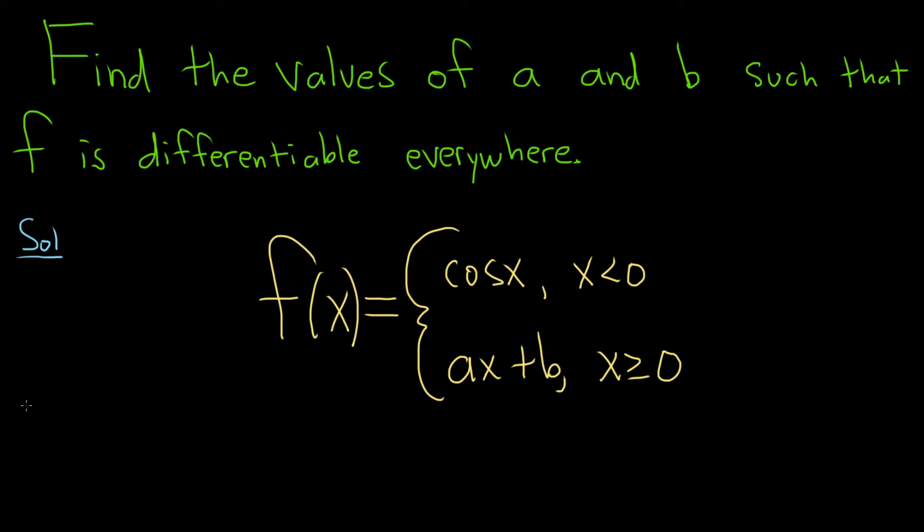Let's start by taking the derivative of f. We can specify a formula for f'(x) as long as we exclude 0. The derivative of cosine is negative sine, for x less than 0.